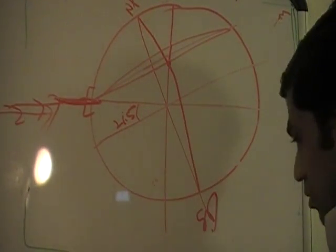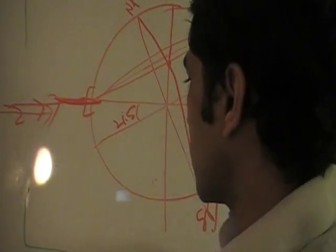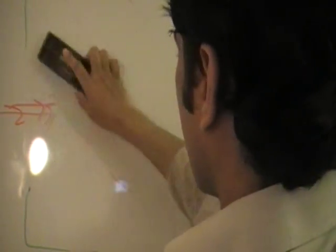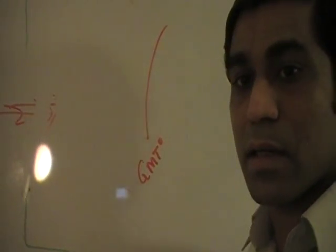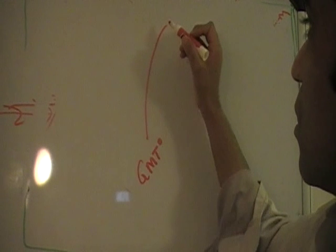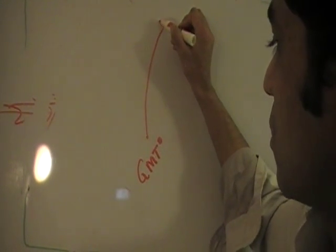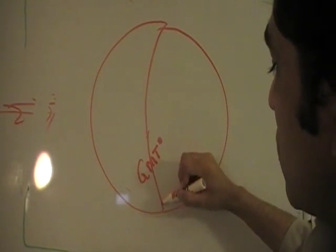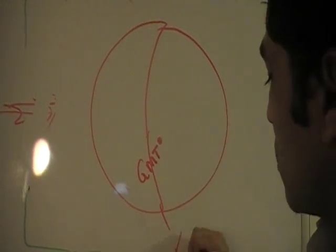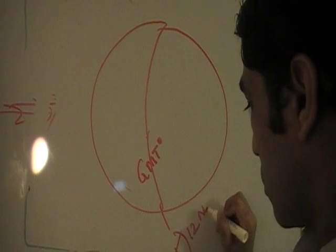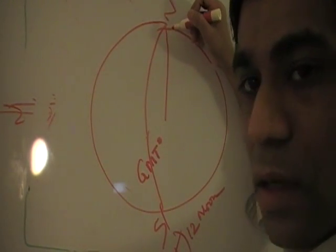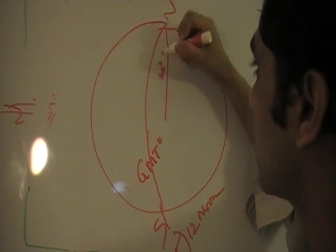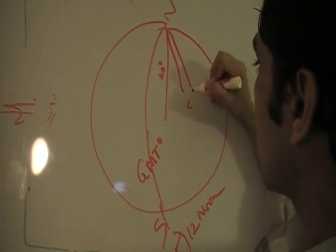Let me first tell you about latitude and longitude, because I think I have not mentioned longitude till now. So let me introduce you to longitude first. Here is the GMT — the Greenwich Mean Time meridian — and this is considered to be 12 noon. This is north pole and south pole. East of this will be like 10 degrees, 20 degrees east. This is 20 degrees east. Further east you go until you reach Saudi Arabia, which is 40 degrees east.